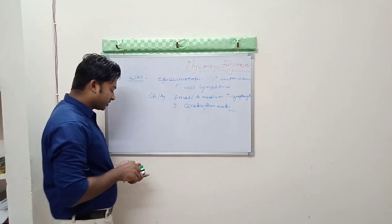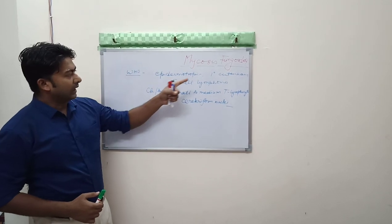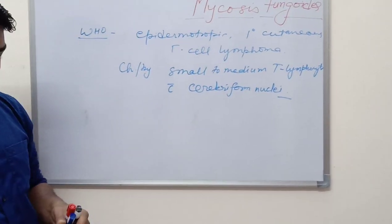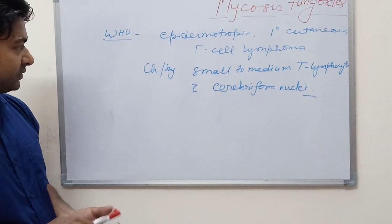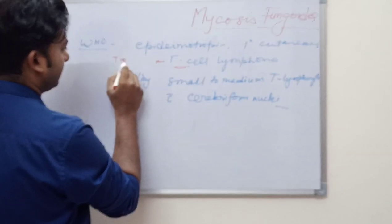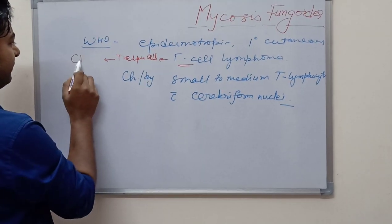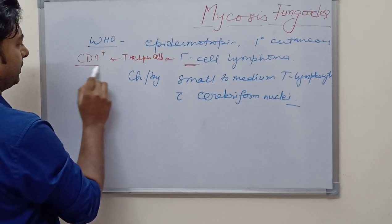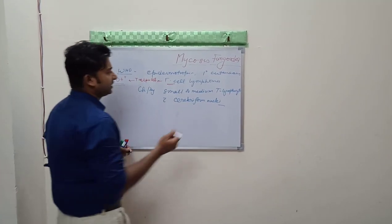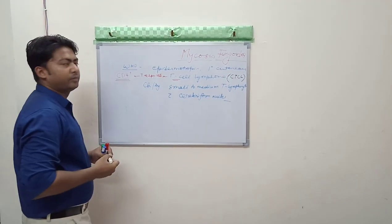Mycosis fungoides is epidermotropic. We will see the mechanism of epidermotropism. It is primary cutaneous T-cell lymphoma characterized by small to medium T lymphocytes with cerebriform nuclei. The T cell here is T helper cell, CD4 positive. The standard abbreviation for cutaneous T-cell lymphoma is CTCL.